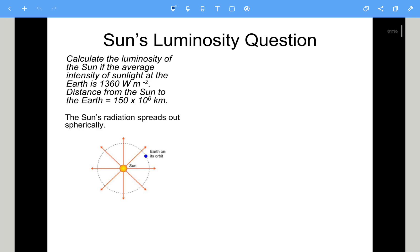Alright, let's see how this one's gone then. So calculate the Luminosity of the Sun. If the average intensity of sunlight at the Earth is 1,360 watts per metre square, we know the distance from the Sun to the Earth is 150 times 10 to the 6 kilometres, which is just one astronomical unit. And obviously the Sun's radiation will spread out spherically.